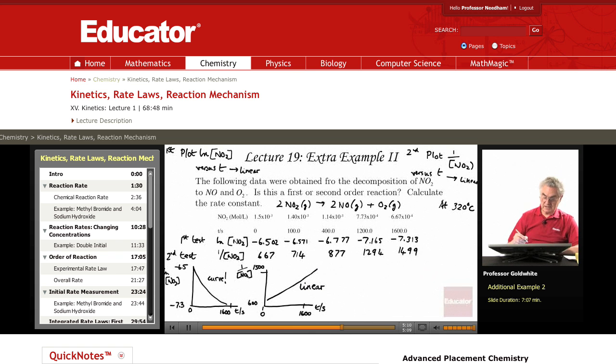Our conclusion then is the reaction is second order. The rate constant k is given by the slope of the line. k equals 1499 minus 667, the units being liters per mole, because the concentrations are in moles per liter. And this is 1 over the concentration. Divided by 1600 minus 0 seconds.